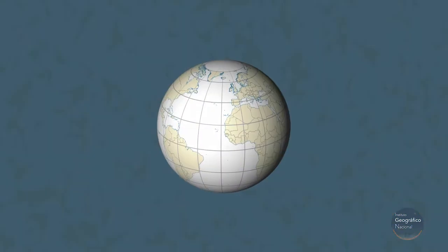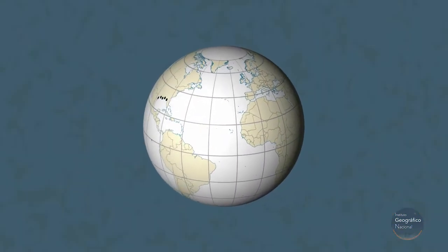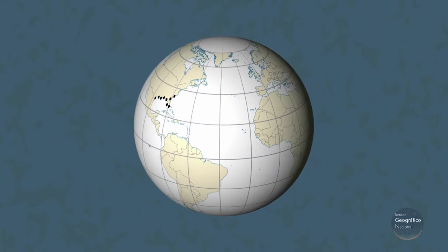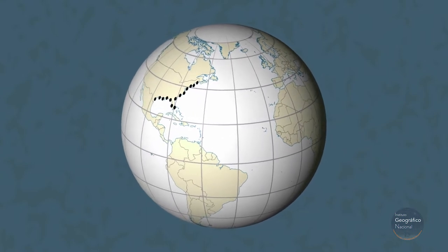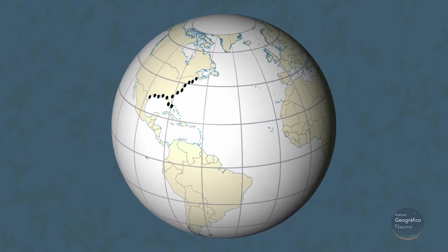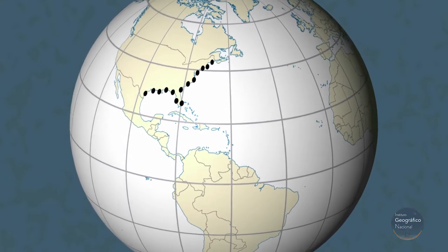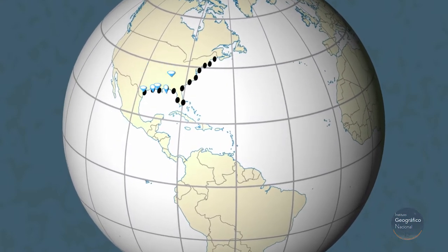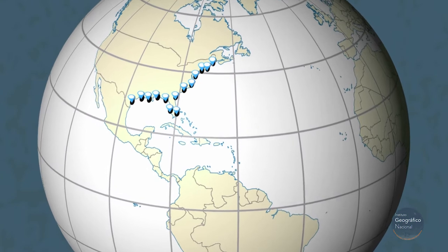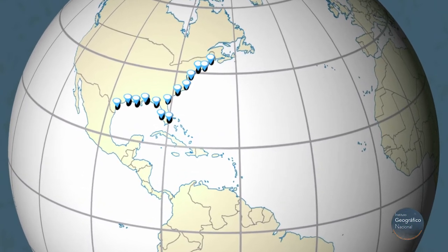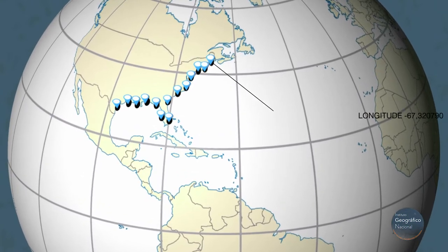So how do we make maps from the ellipsoid or the sphere? Imagine that we want to draw the outline of the continents. Today we can measure the points of that line on the ellipsoid directly with GPS. The position of each point is given with two numbers: longitude and latitude.